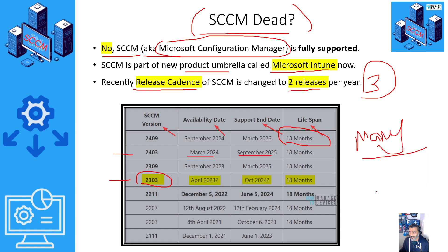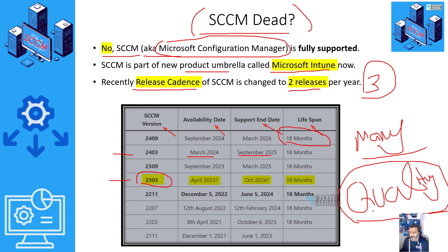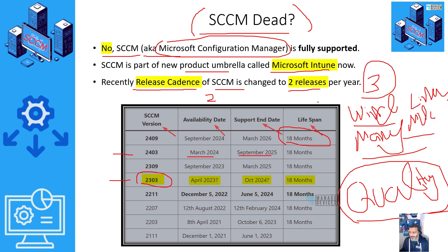SSCM is not dead at all. It is used by many organizations. The next release will be baseline version 2403, and all March releases will be baseline versions with an 18-month support lifespan — that has not changed. The reasons Microsoft gave for changing the release cadence are to concentrate on quality and to align with the Windows release cadence. SSCM is purely a Windows device management solution; support for Linux and Mac devices has been removed.